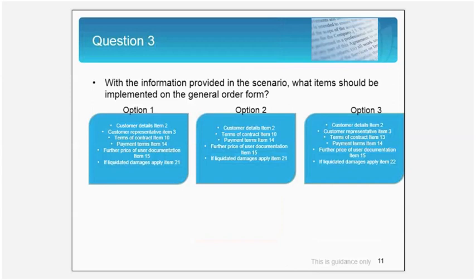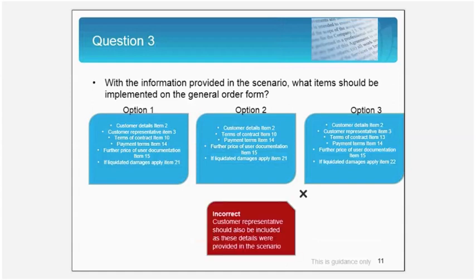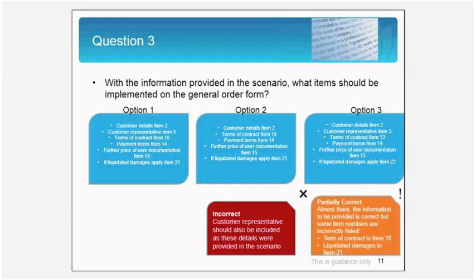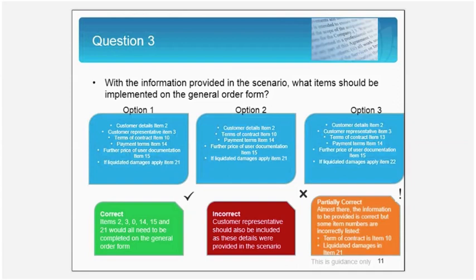Let's now examine, given the scenario, what items should be implemented on the general order form. Let's take a few moments to look at the three options. Option 2 would be the incorrect option since it does not include a customer representative item, which is detailed in the scenario. Option 3 is partially correct since it captures all elements, but two of the item numbers are listed incorrectly. Option 1 is the correct answer, as it includes all the items which need to be covered off across all the elements in the scenario.